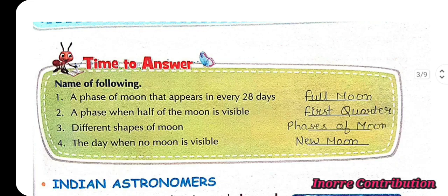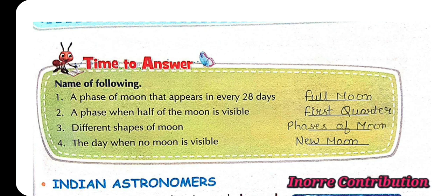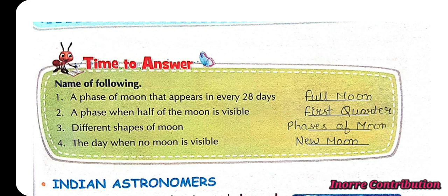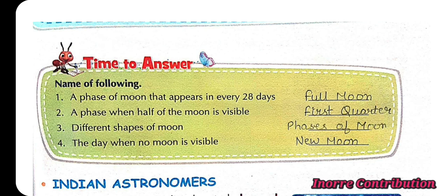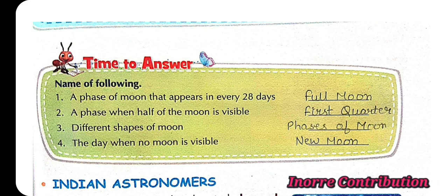Time to answer. 1. A face of moon that appears in every 28 days. Full moon. 2. A face when half of the moon is visible. First quarter. 3. Different shapes of moon. Phases of moon. 4. The day when no moon is visible. New moon.